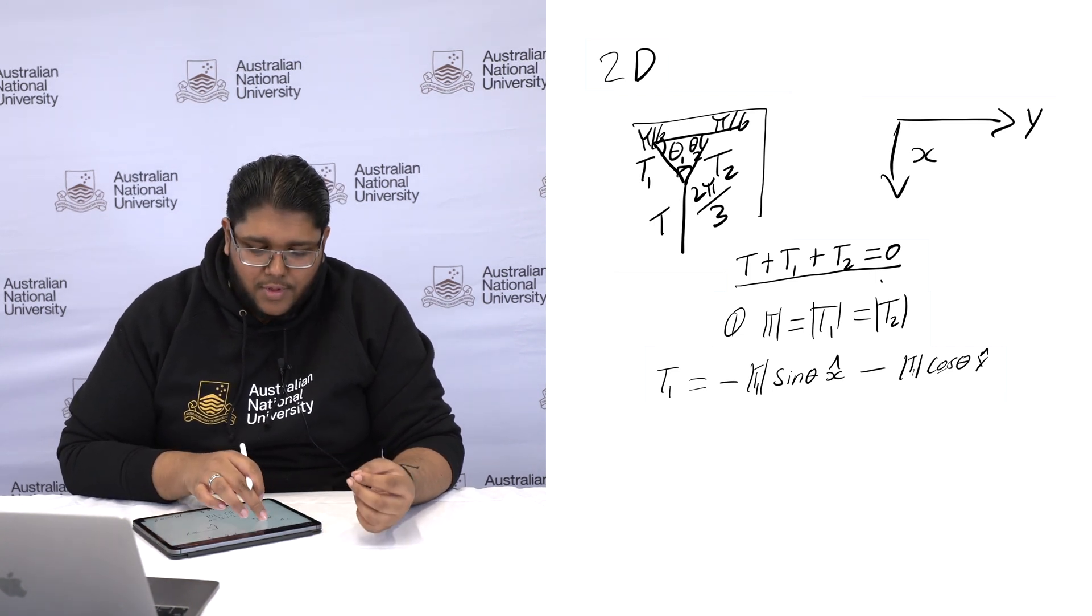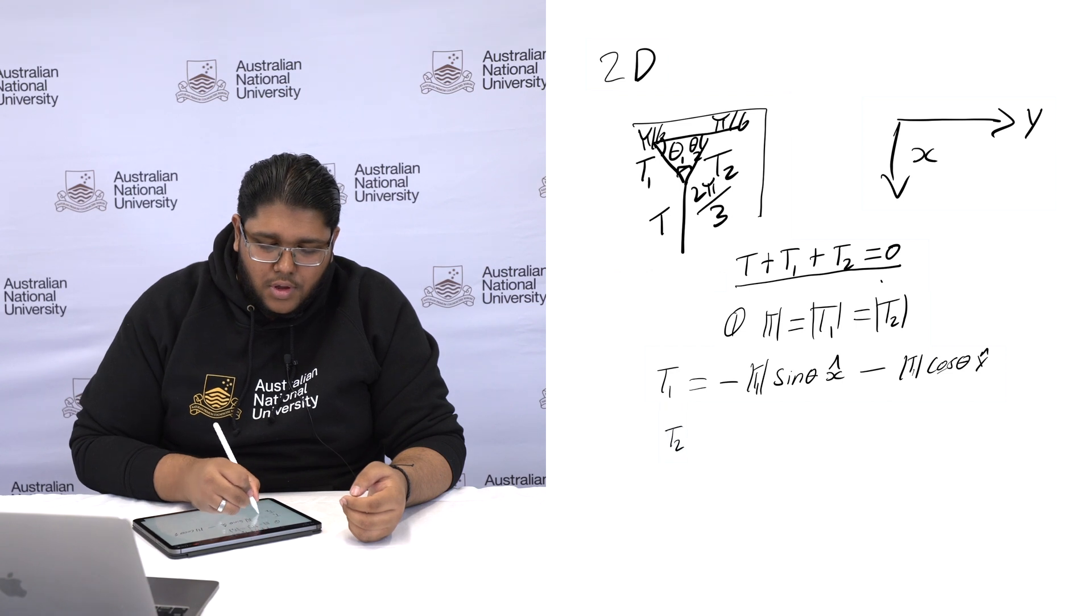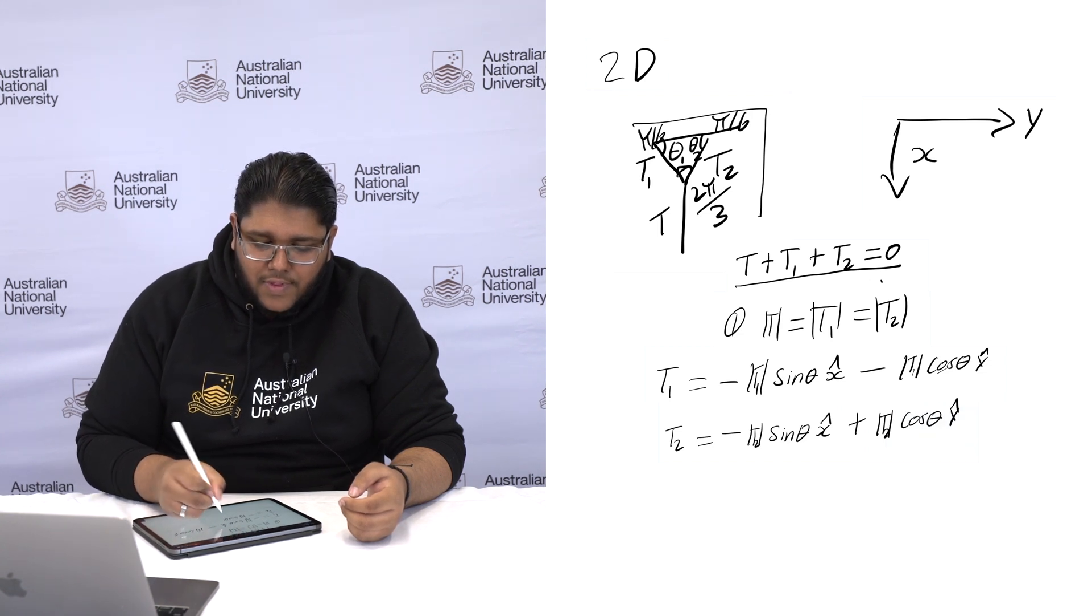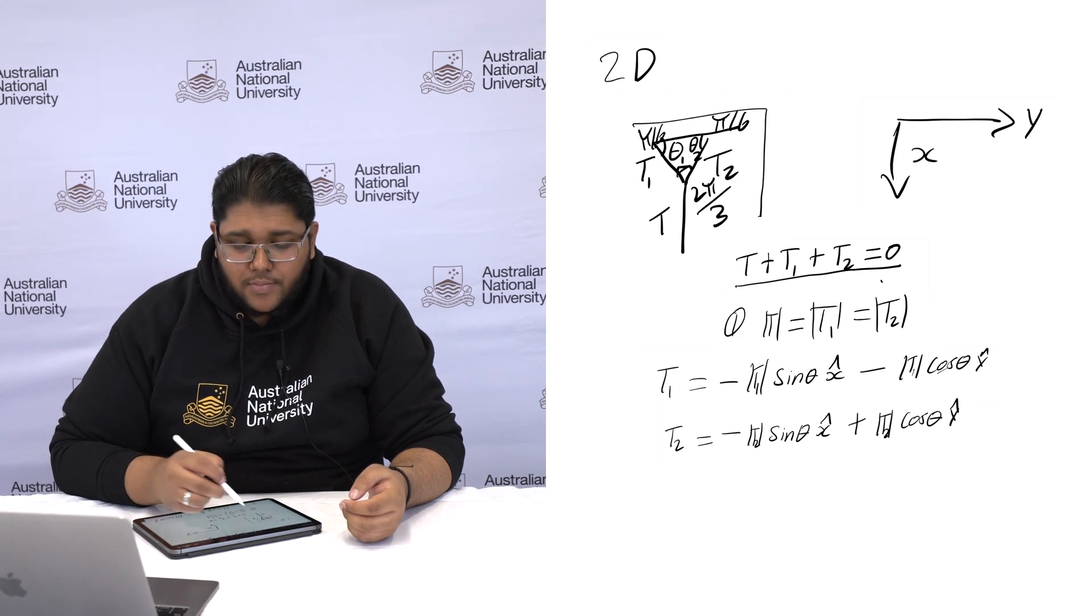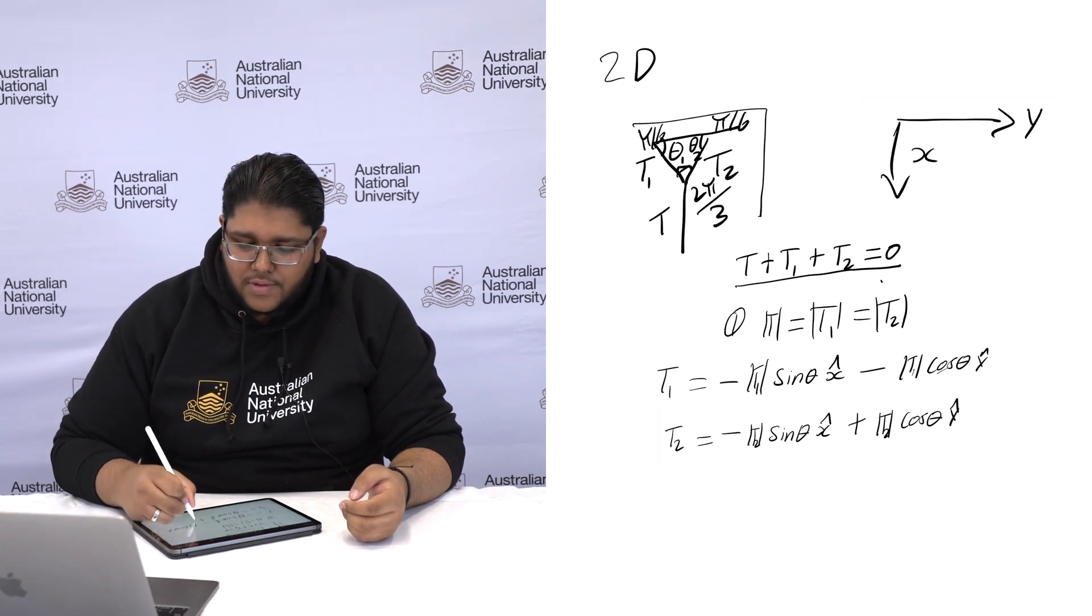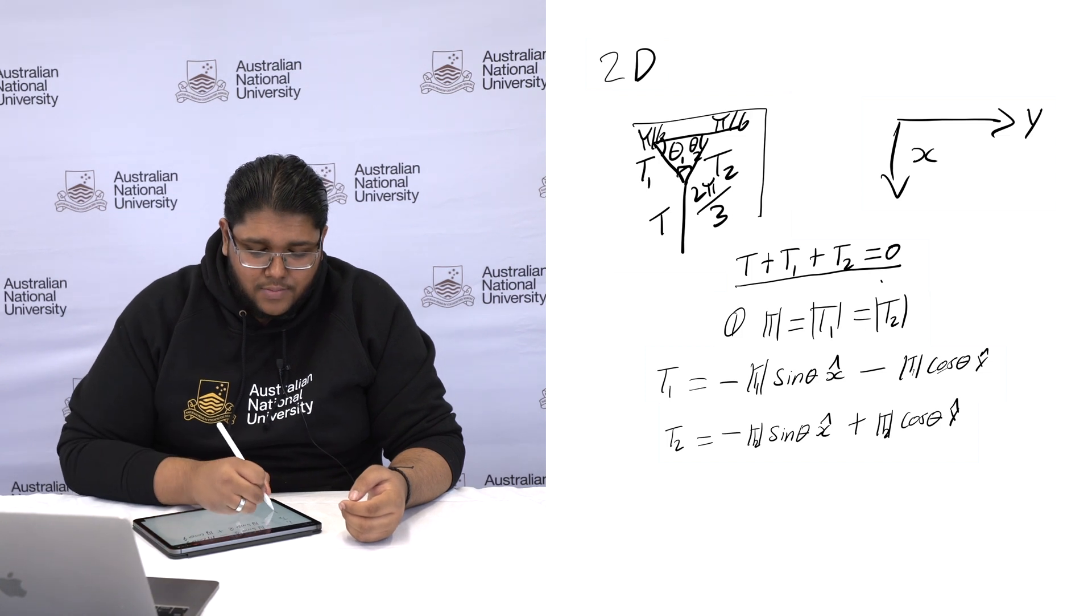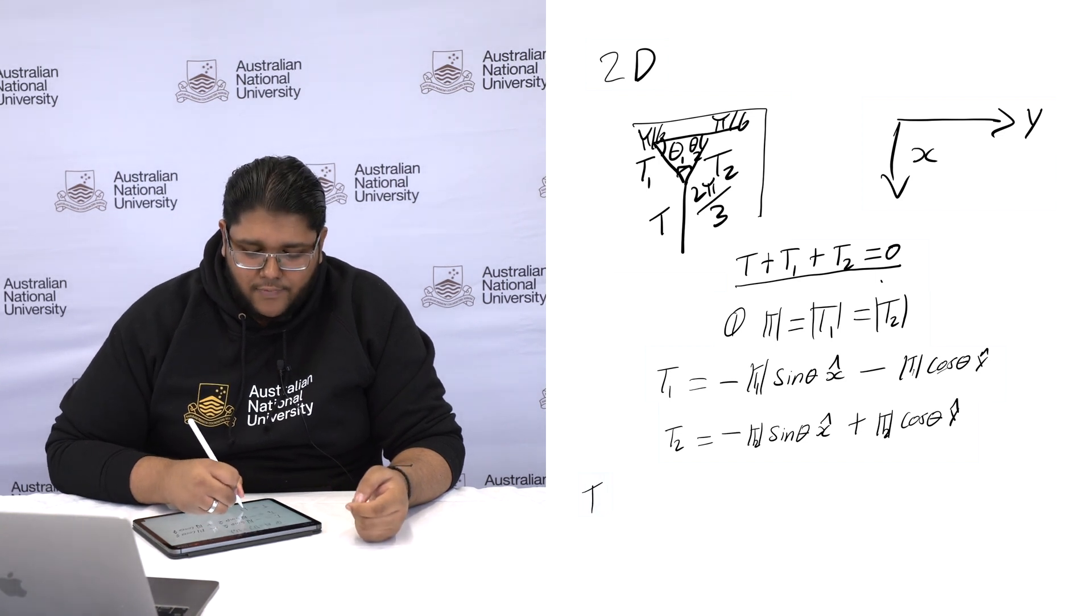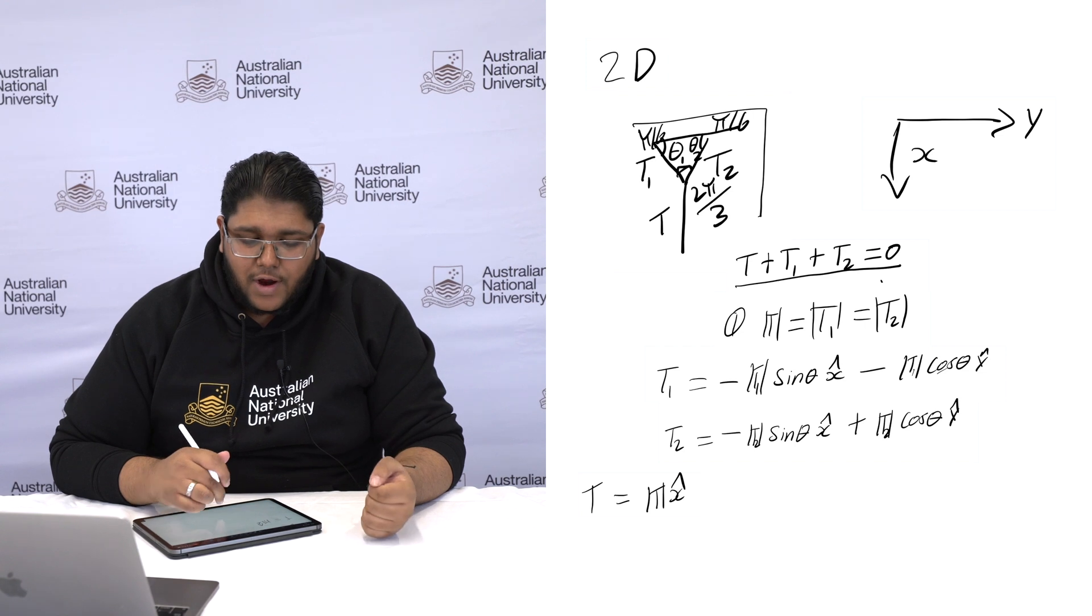T2 will be quite similar as we can see over here in this diagram. So t2 will equal negative absolute value of t2 cosine theta in the direction of x. But because t2 is on the opposite side, it will be plus the absolute value of t2 cos theta in the direction of y. Now we can go on to t. T only has one force direction. T will equal the absolute value of t in the direction of x.